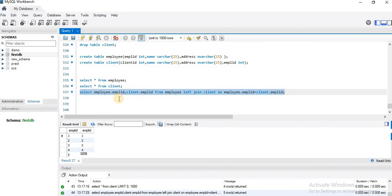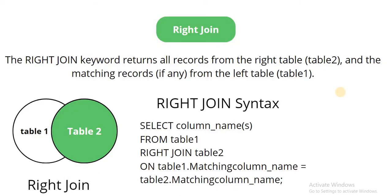Similarly, ab hum right join dekhenge. The right join keyword returns all the records from table two and the matching records, if any, from the left table (table one). Yahan opposite hai — left join mein left table poora show ho raha tha, right join mein right table poora show hoga aur left table mein se utne hi records fetch honge jo matching rows show ho rahe hain. Right join ka syntax bhi same hai: SELECT column name FROM table one RIGHT JOIN table two ON table one dot matching column name is equal to table two dot matching column name.